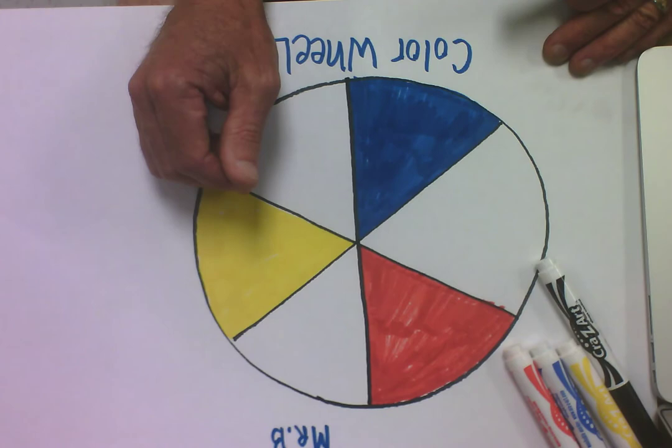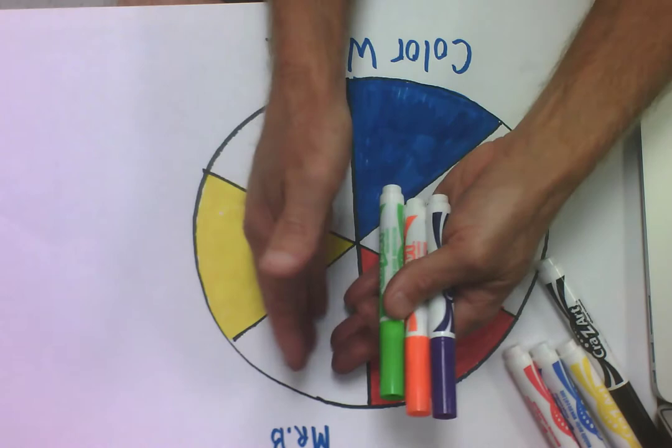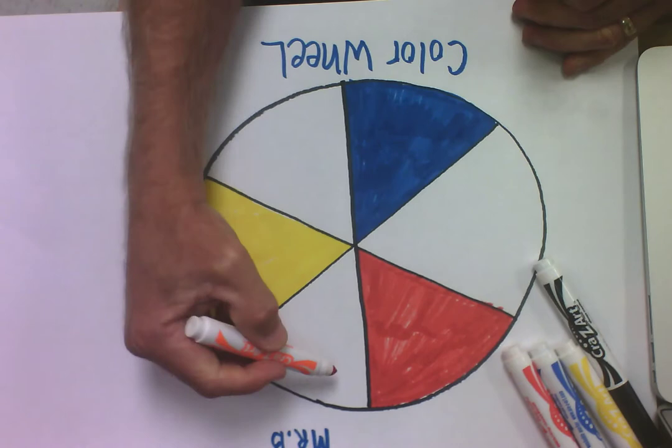What is going to go between red and yellow? So if I take these two colors and I move them to this pizza slice together and I mix them, yes, of course, it's going to be orange.